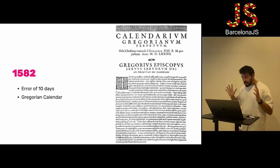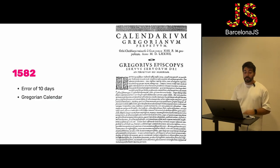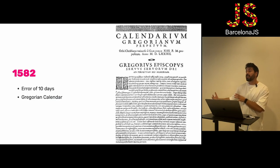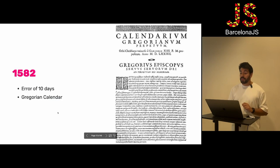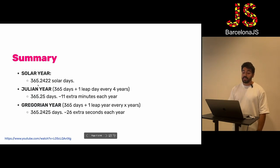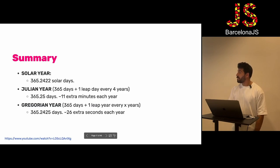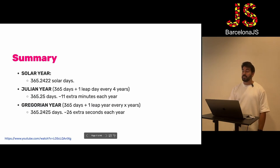By 1582, this calendar had worked well, but the Christians had accumulated an error of 10 days. That's why Pope Gregory decided to change the Julian calendar with small adjustments to fix it. The Julian calendar defines a year as 365 days and a quarter — one leap year every four years. The Gregorian calendar changed the leap year rules to adjust this difference. With the Gregorian calendar, we only have an error of a few seconds per year.